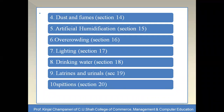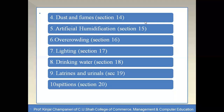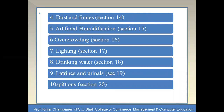The fourth provision is dust and flames under Section 14. Effective arrangements must be made to prevent or reduce inhalation and accumulation of dust. The fifth provision is artificial humidification under Section 15. In factories such as cotton textile and cigarette manufacturing units, artificial humidification is required and state government rules should be followed. Water used for this purpose must be properly purified.